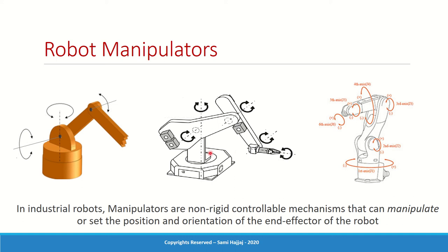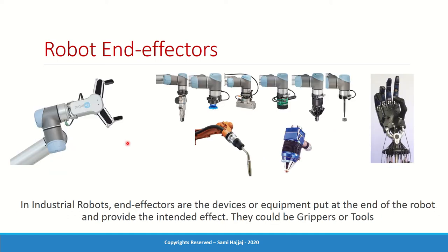The purpose of the manipulator, as the name implies, is to manipulate — or set — the position and orientation of the end of the robot: whatever we put at the end, like a gripper or a tool. Think of the manipulator as your arm and the end effector as your wrist and fingers. The end effector is the device placed at the end of the robot that provides the effect we want — that's why it's called the end effector.